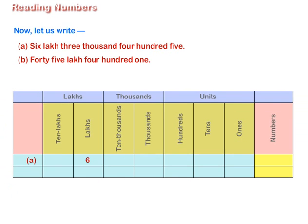Now let us write 6,003,405 in figures. Here, 6 is at the lakhs place. There is no digit at the ten thousands place. 3 is at the thousands place. 4 is at the hundreds place. There is no digit at the tens place. And 5 is at the ones place. So, 6,003,405 is written accordingly in figures.